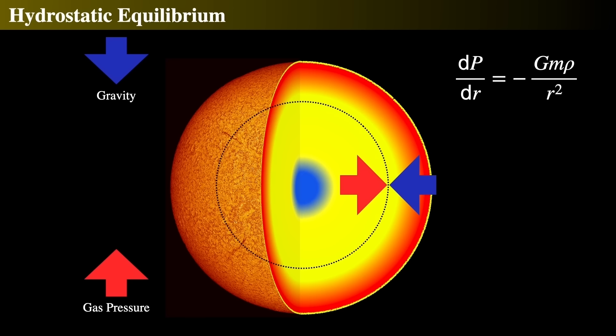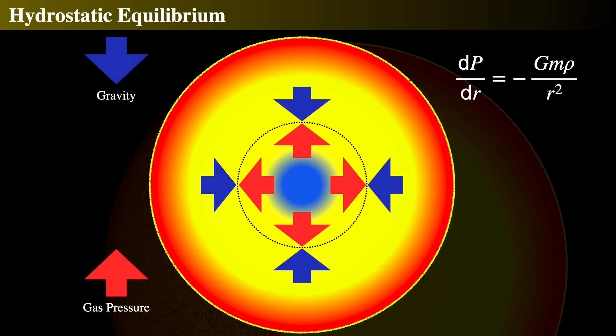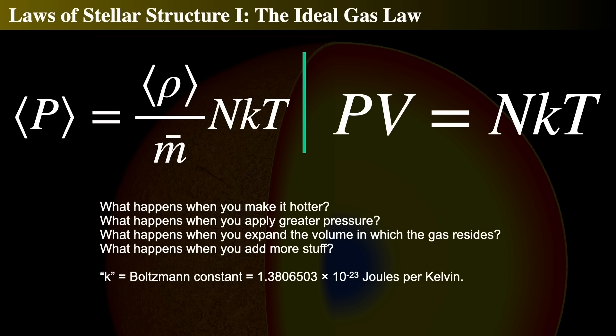Let's look at that one more time. The blue arrows represent gravity pulling in and gas pressure pushing outward. As you go deeper, the pressure increases as the gravitational force increases too. So most stars — how does the pressure vary inside? What determines the pressure? We go back to high school chemistry with the ideal gas law, which we'll use to determine the relationship between pressure, density, and temperature of the gas inside the star.